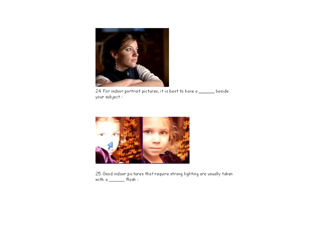When taking pictures with a flash, sometimes the person's face looks almost white — this is called flash blowout. A good tip is to place a piece of Kleenex over the flash, which spreads out the light and makes it less intense. The result is more even lighting. Professional photographers often use something white in front of their flash for the same effect.